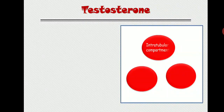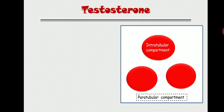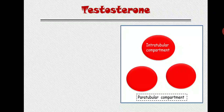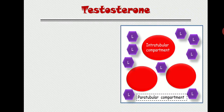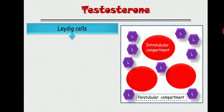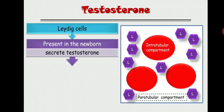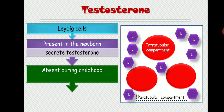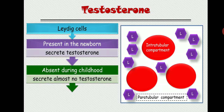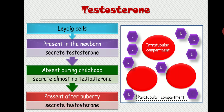In a cross-section showing three seminiferous tubules, the area between the tubules is the peritubular or intertubular compartment. Inside this compartment are Leydig cells. Leydig cells are present in newborns and secrete testosterone, are absent during childhood, then reappear after puberty and again secrete testosterone.